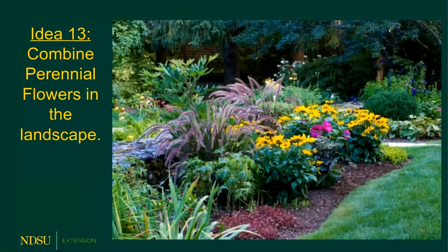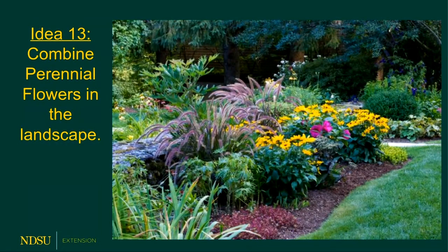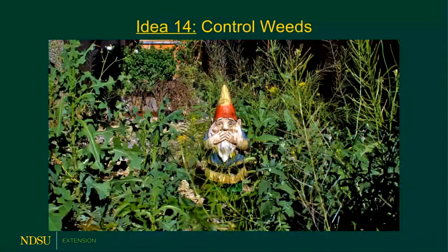Idea thirteen: combine perennial flowers into the landscape instead of just shrubbery. Using hardy winter-hardy perennials, plant some that are early summer blooming, some that are summer flowering, and include fall blooming ones — so you'll have a landscape that is continually changing with bright new flowers all season long. That makes the landscape fun.